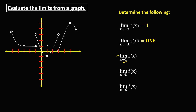Then for the limit of f of x as x approaches positive 1. To find the limit of f of x as x approaches positive 1 from the left, and the limit of f of x as x approaches positive 1 from the right. As x approaches positive 1 from the left, the limit is negative 1.